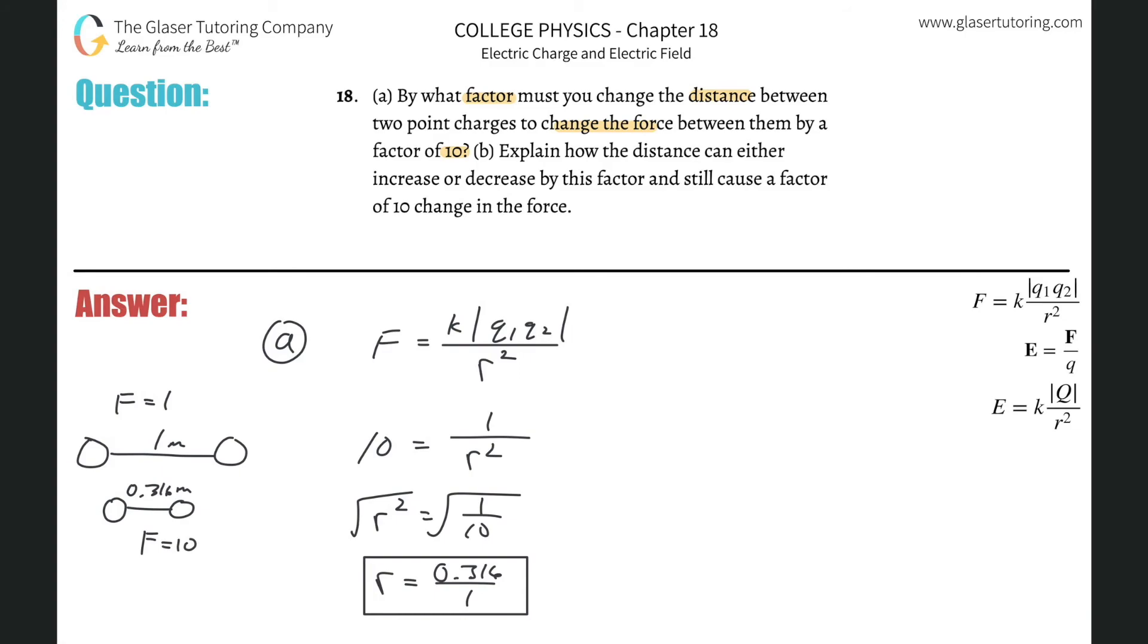Letter B asks how the distance can either increase or decrease by this factor and still cause a factor of 10 change to the force. If we were to lengthen instead of shortening it, we could have lengthened the distance by essentially the reciprocal of this change. If we were to find that, we would have noticed they would have been the same.